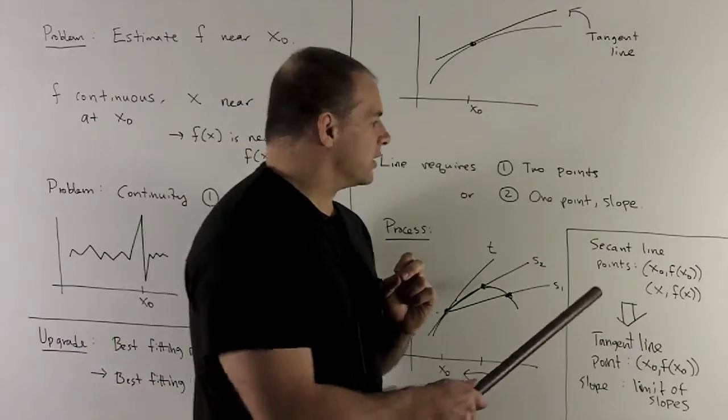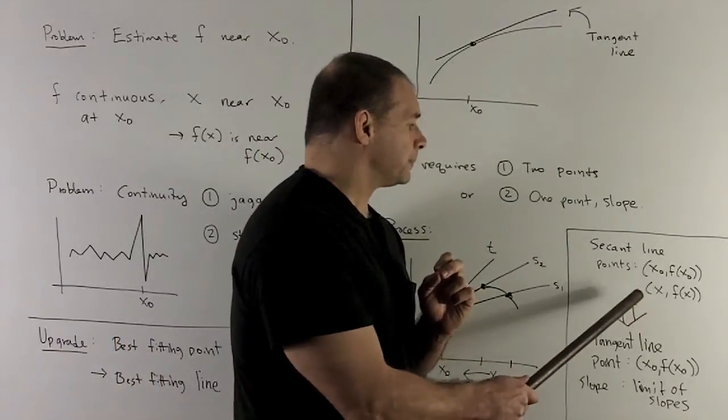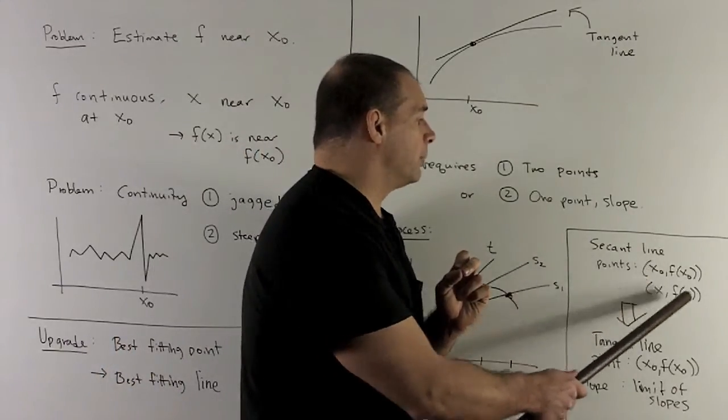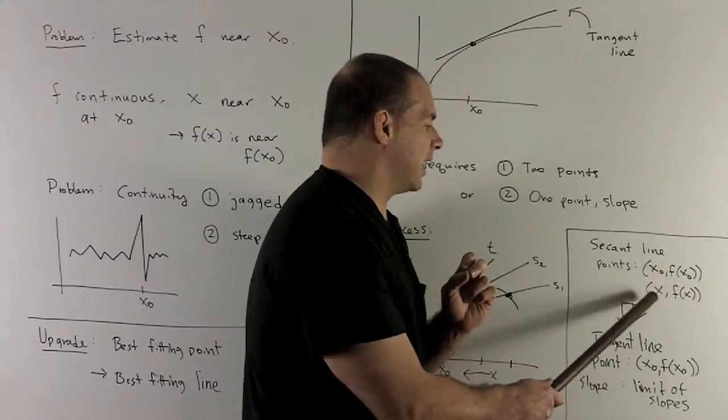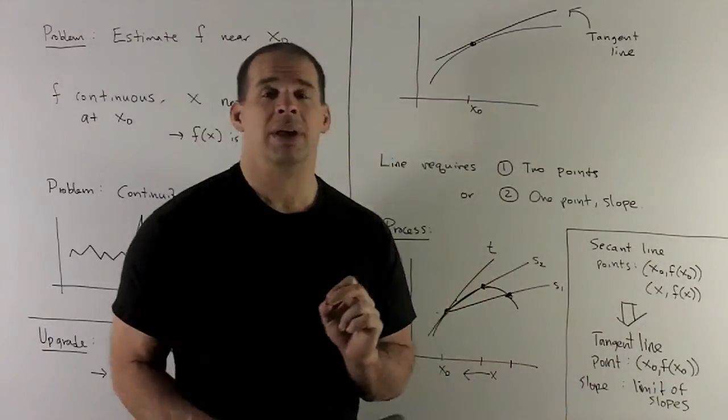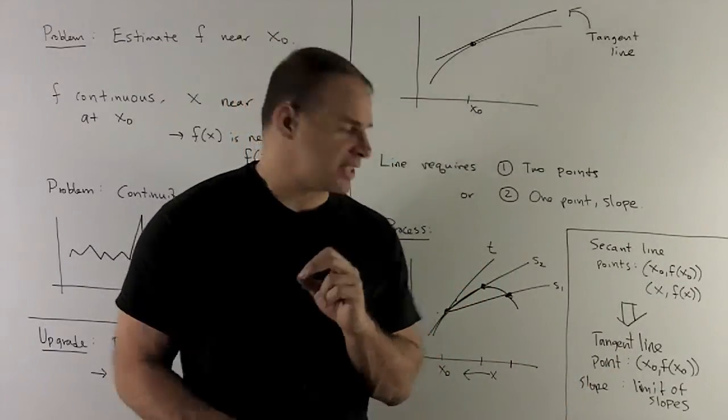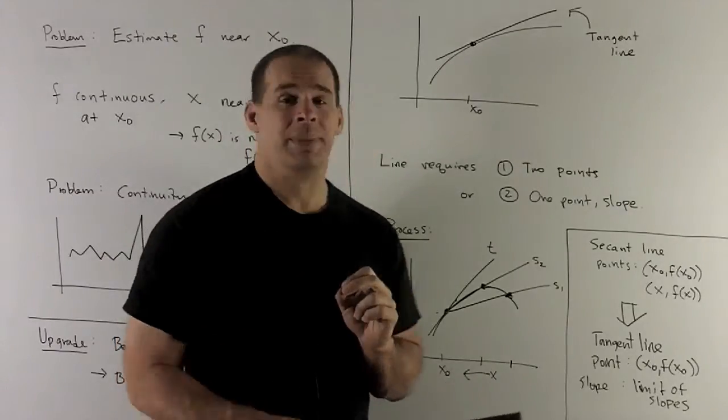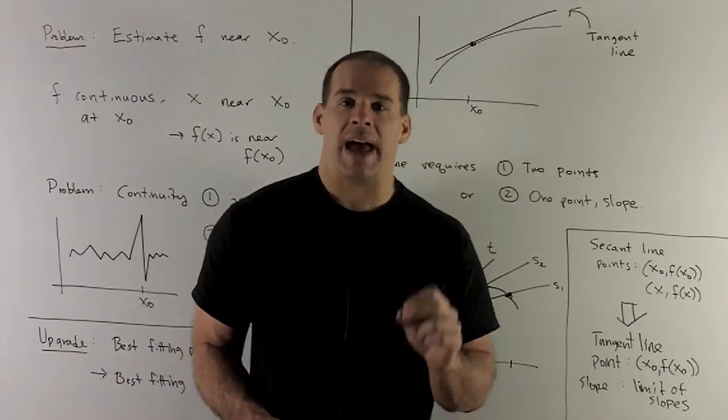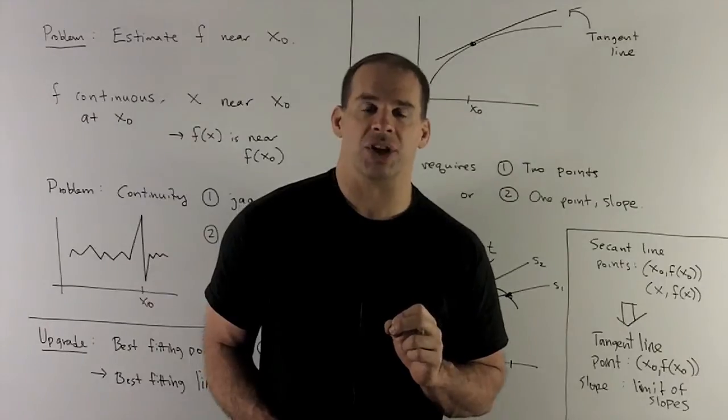So how am I going to get the slope? Well, the idea is I take these secant lines. We're going to be able to compute the slope since I know how to get the slope off of two points. We're going to take the limit as I let this x come into x0. If that limit exists, that's what we're going to call the slope of our tangent line.